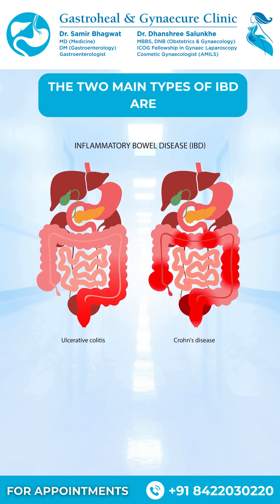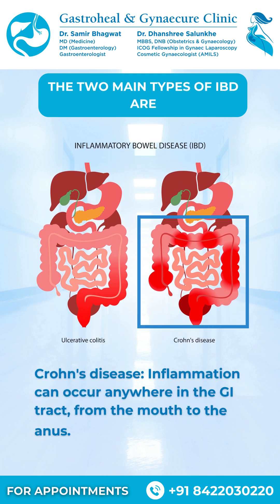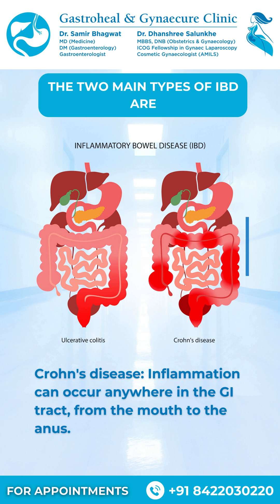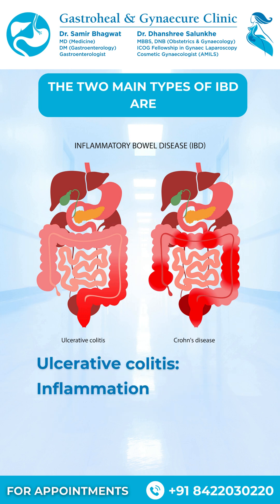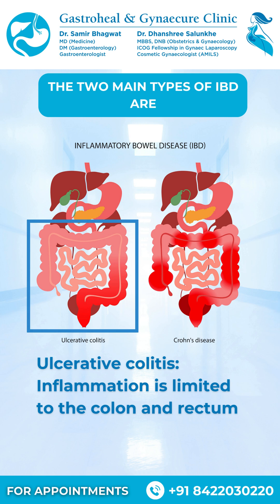The two main types of IBD are Crohn's disease, where inflammation can occur anywhere in the GI tract from the mouth to the anus, and Ulcerative colitis, where inflammation is limited to the colon and rectum.